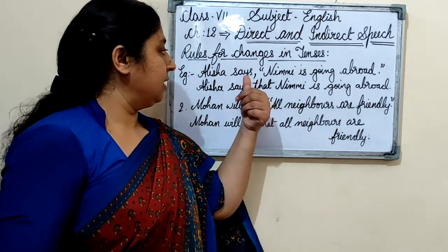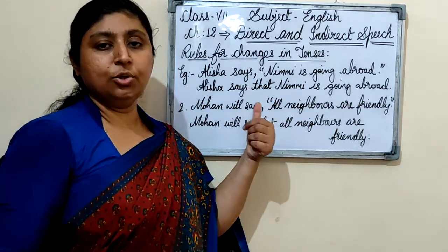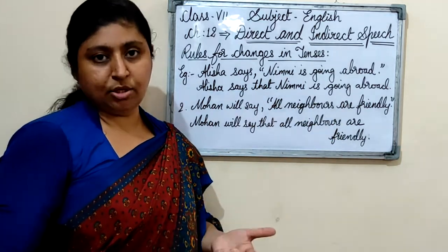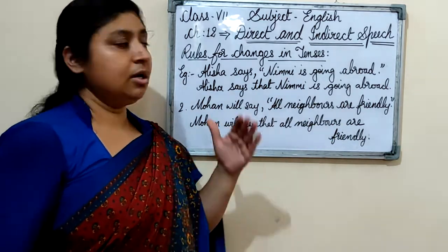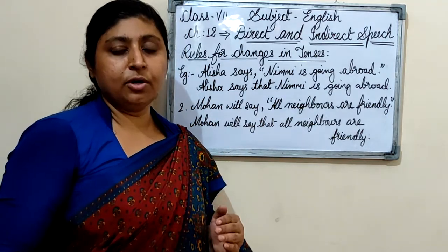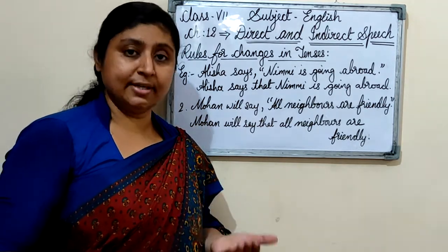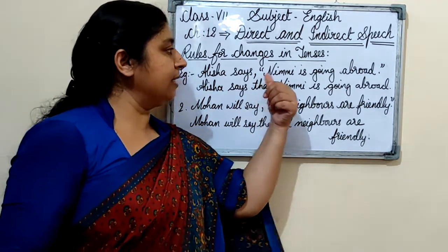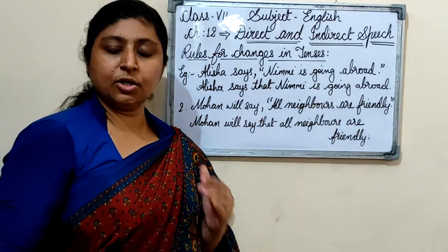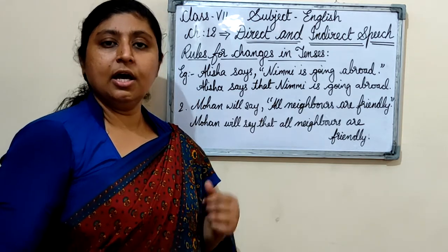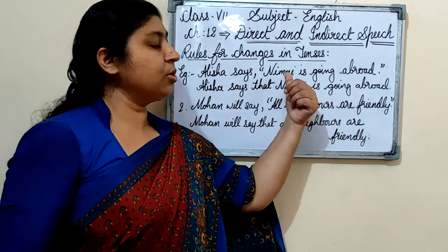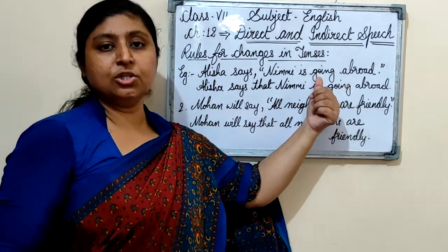So what is the reporting verb? Says, said, told — these types of words are reporting verbs. And the reporting speech is the statement. When we change the tenses, the rule is: if the reporting verb is in present tense or future tense, there are no changes in the tense of the reported speech when converting to indirect speech.